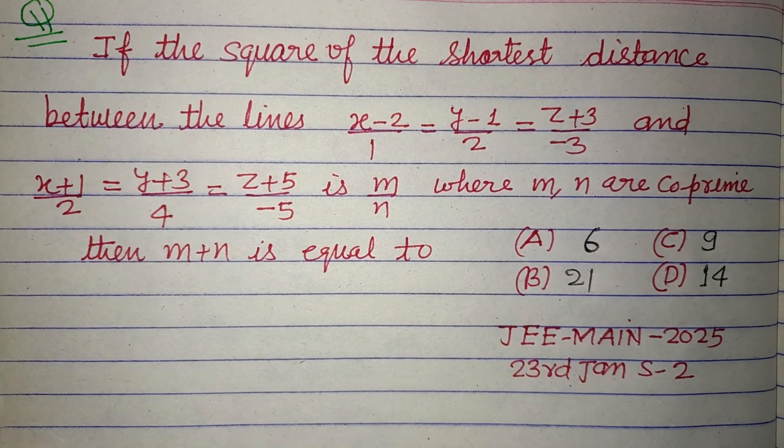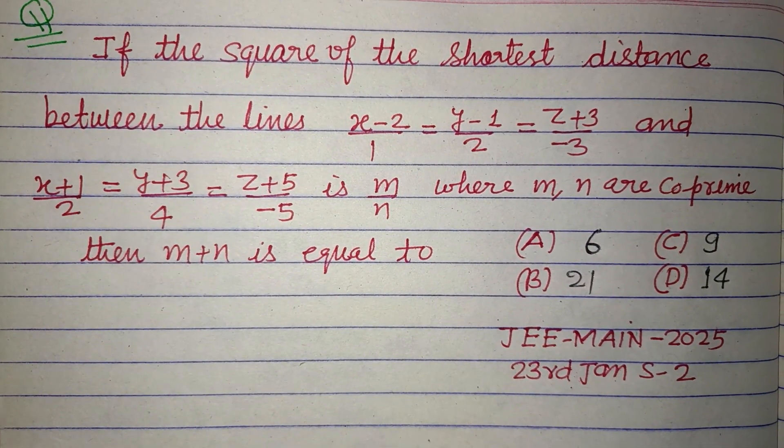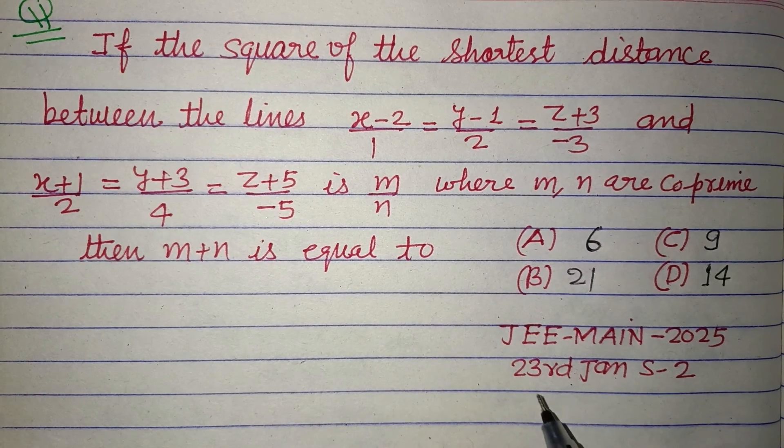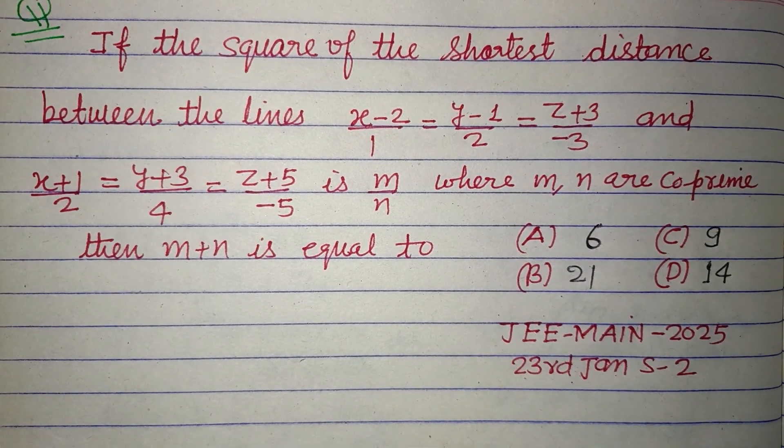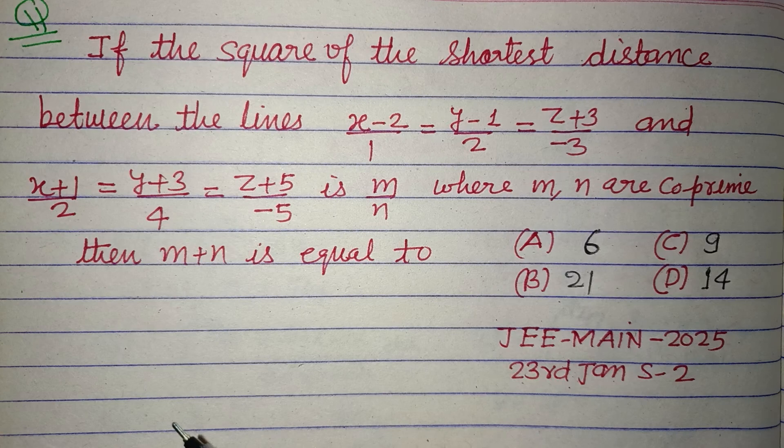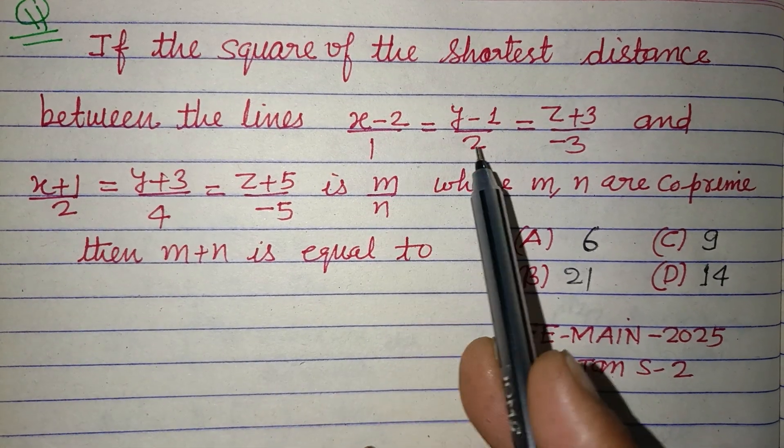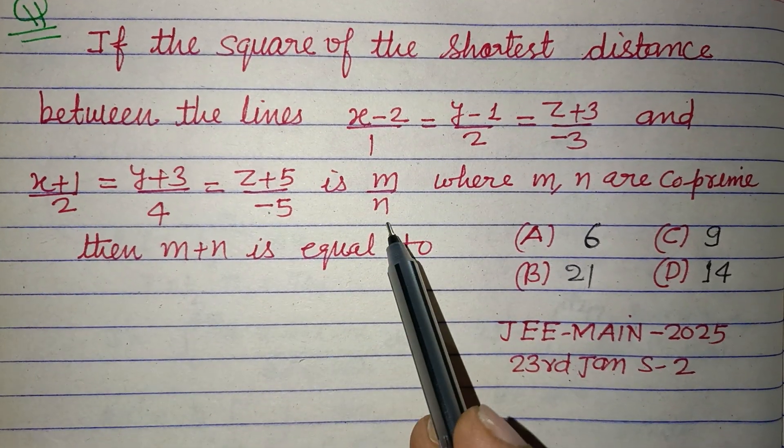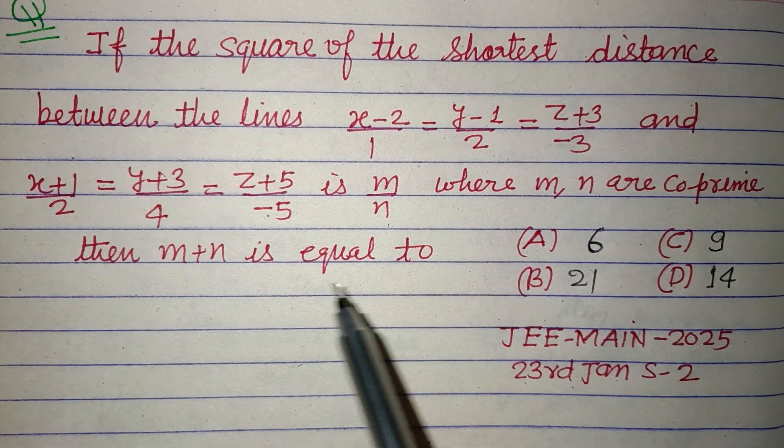Hello viewers, warm welcome to this YouTube channel. Question from JEE Main 2025, 23rd January, shift 2: If the square of the shortest distance between the lines, which is given here, is m over n where m, n are co-prime, then m plus n is equal to.